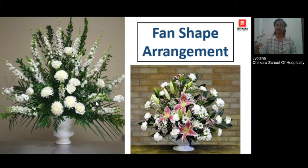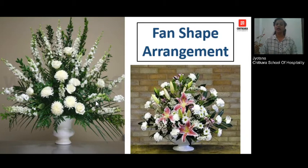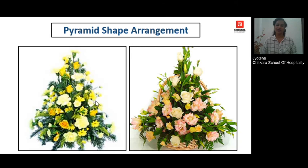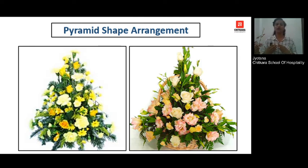Next is the fan shape — you would have the container and the arrangement will be somewhat like a fan in shape. In the image you can also see the plant container and the foliages and fillers have been chosen accordingly to give it a fan shape. Next is the pyramid shape. It will be a triangle but it will be visible from all the sides, so these kinds of arrangements are generally kept as a centerpiece so that they can be viewed from all sides.